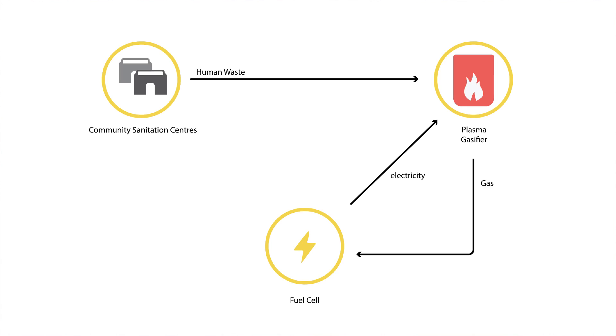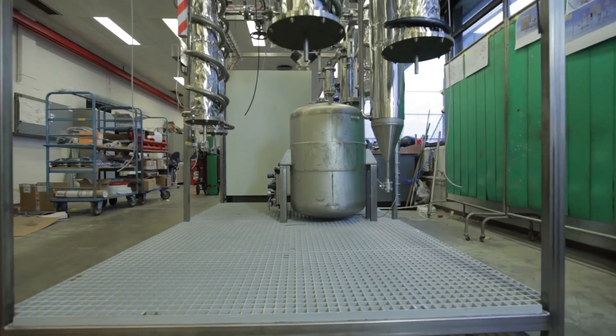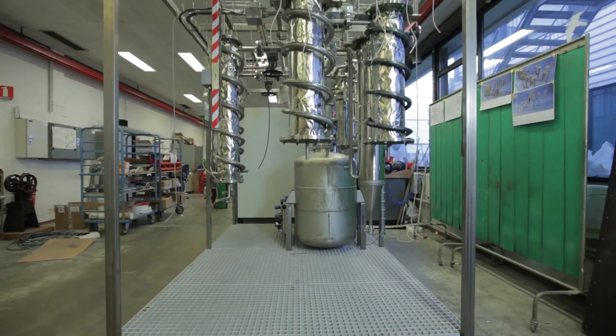The syngas is coming out of the gasifier with a lot of contaminants. And the gas cleaning unit will take out almost all these contaminants to the levels acceptable for the solid oxide fuel cell.